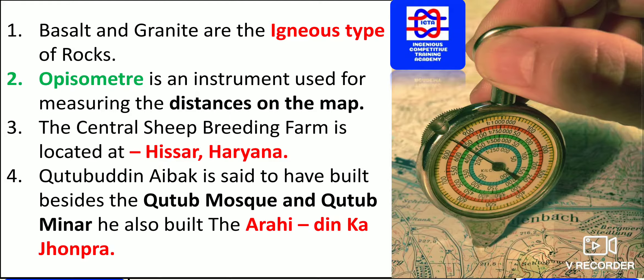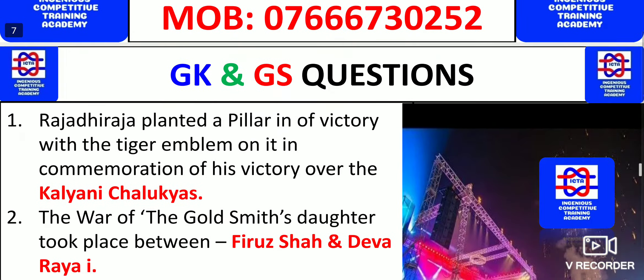Qutbuddin Aibak is said to have built, besides the Qutub Mosque and Qutub Minar, also the Rai Pithora fort (Rai Dinka Jhopra). Please remember that Qutbuddin Aibak built the Qutub Minar, Qutub Mosque, and Rai Dinka Jhopra.